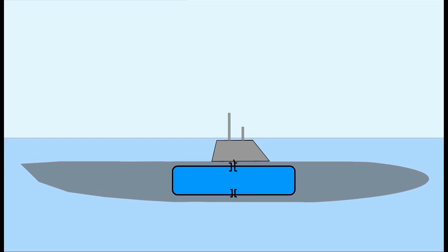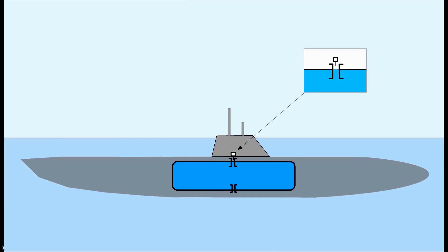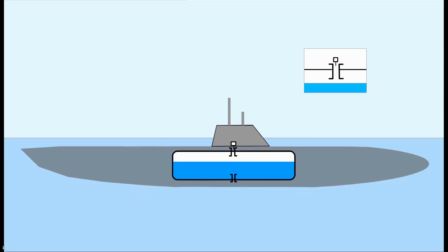If you want the submarine to rise again, you need to replace the water with air. To achieve that, compressed air is pumped into the tank. The air pressure pushes the water out of the tank and the ship gets lighter again.